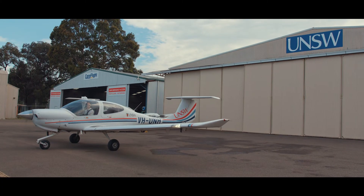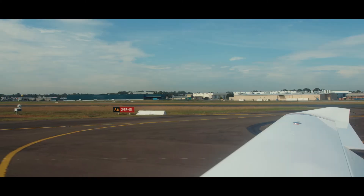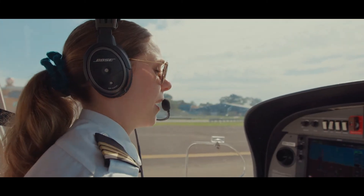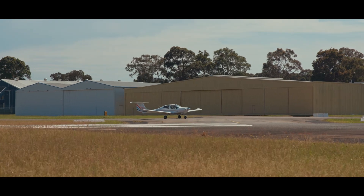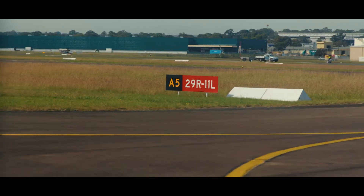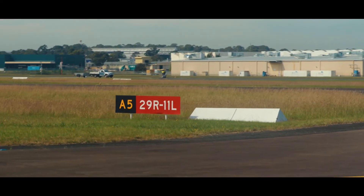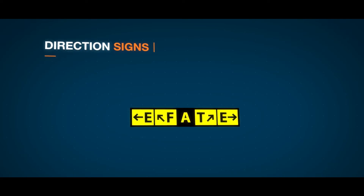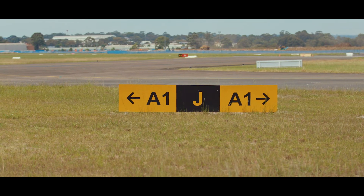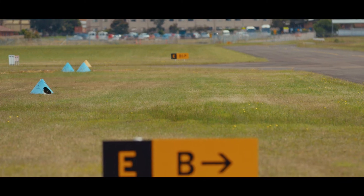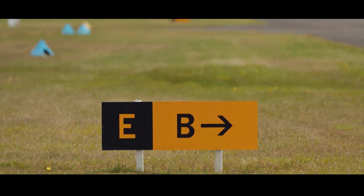When you commence taxiing, pay careful attention and follow all markings and signs, and continue to monitor the air traffic control frequency. Follow your cleared taxi route, referencing the aerodrome chart and signs that identify the taxiway you are on. These are a yellow marking on a black background. You may also see direction signs which identify the designations of taxiways leading to an intersection, as well as an arrow indicating the approximate course to turn to align the aircraft on the taxiway. These have black markings on a yellow background.